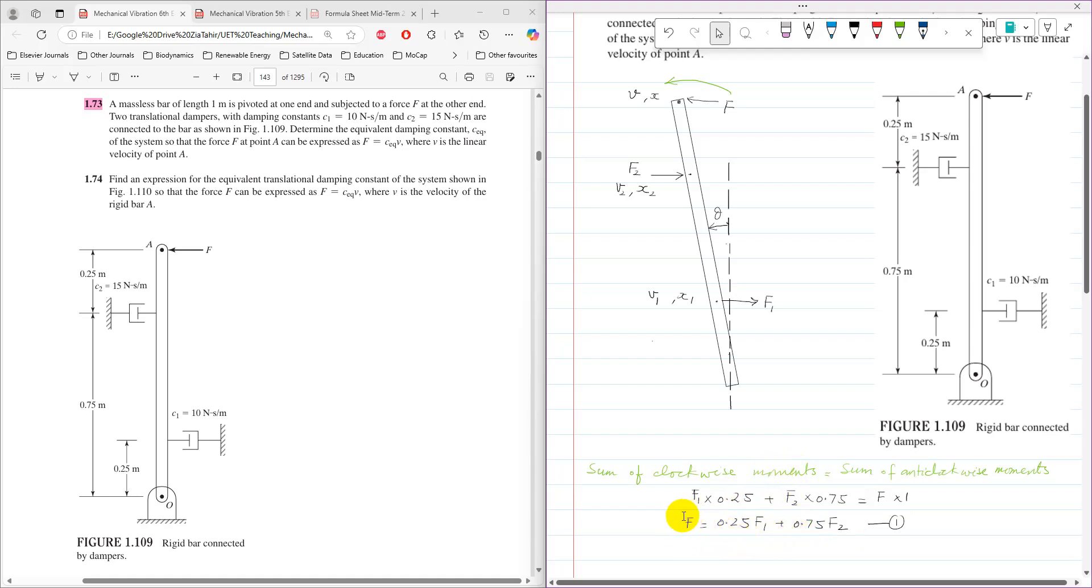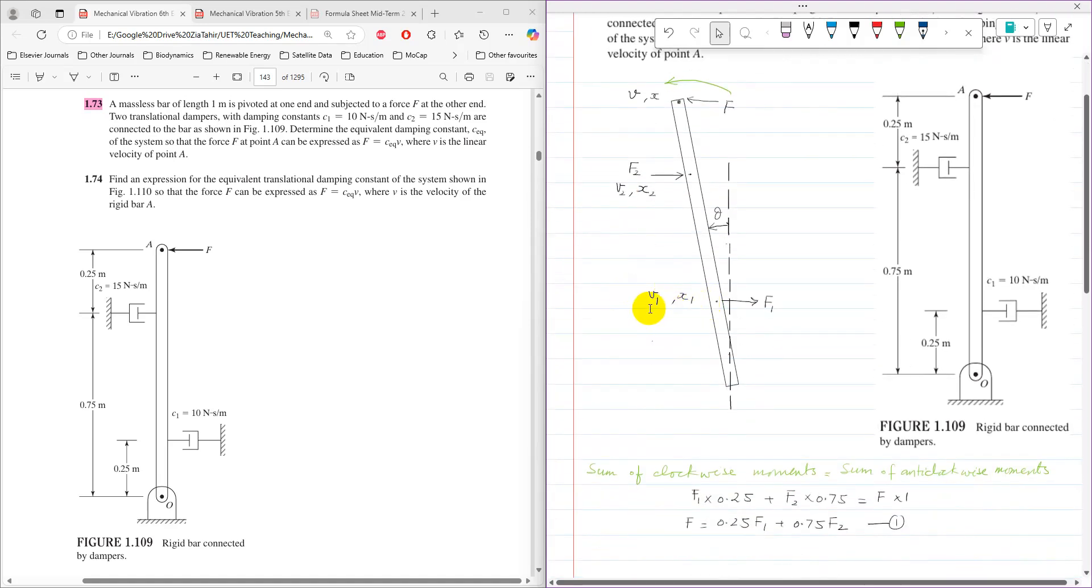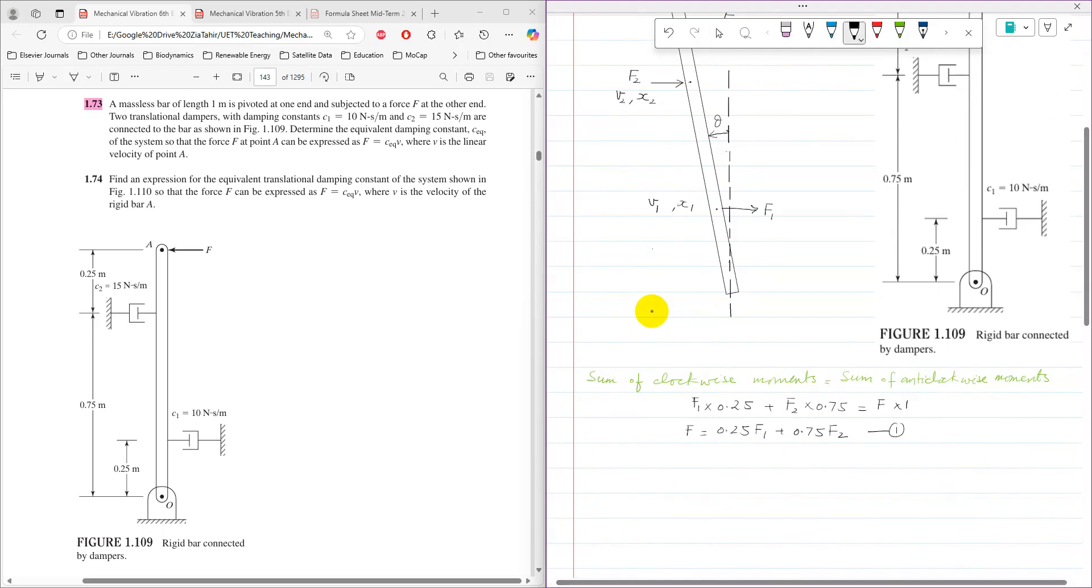We need to write these forces in terms of velocities. F equals C_equivalent times V, F2 becomes C2 times V2, and F1 becomes C1 times V1. This is the standard damping force relationship F equals C times X dot.